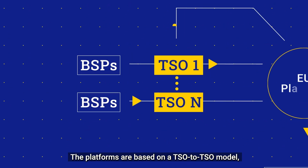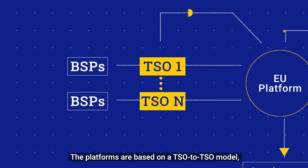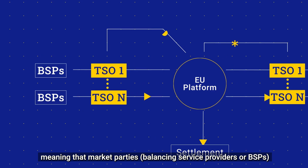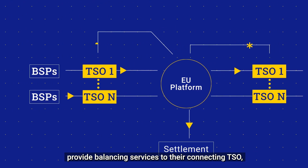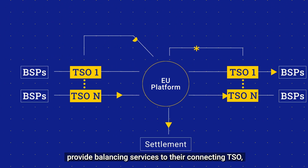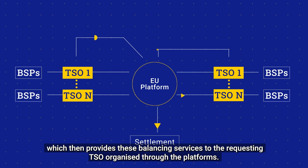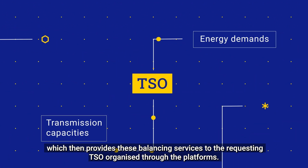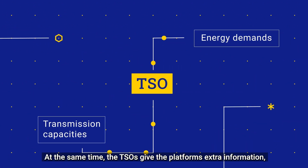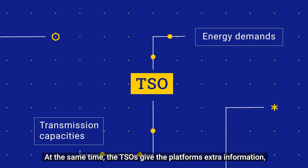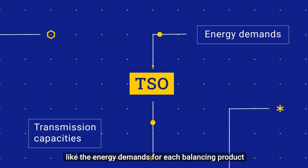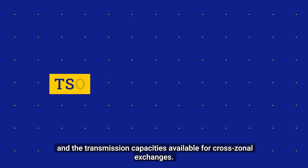The platforms are based on a TSO-to-TSO model, meaning that market parties — balancing service providers or BSPs — provide balancing services to their connecting TSO, which then provides these balancing services to the requesting TSO organised through the platforms. At the same time, the TSOs give the platforms extra information, like the energy demands for each balancing product and the transmission capacities available for cross-zonal exchanges.